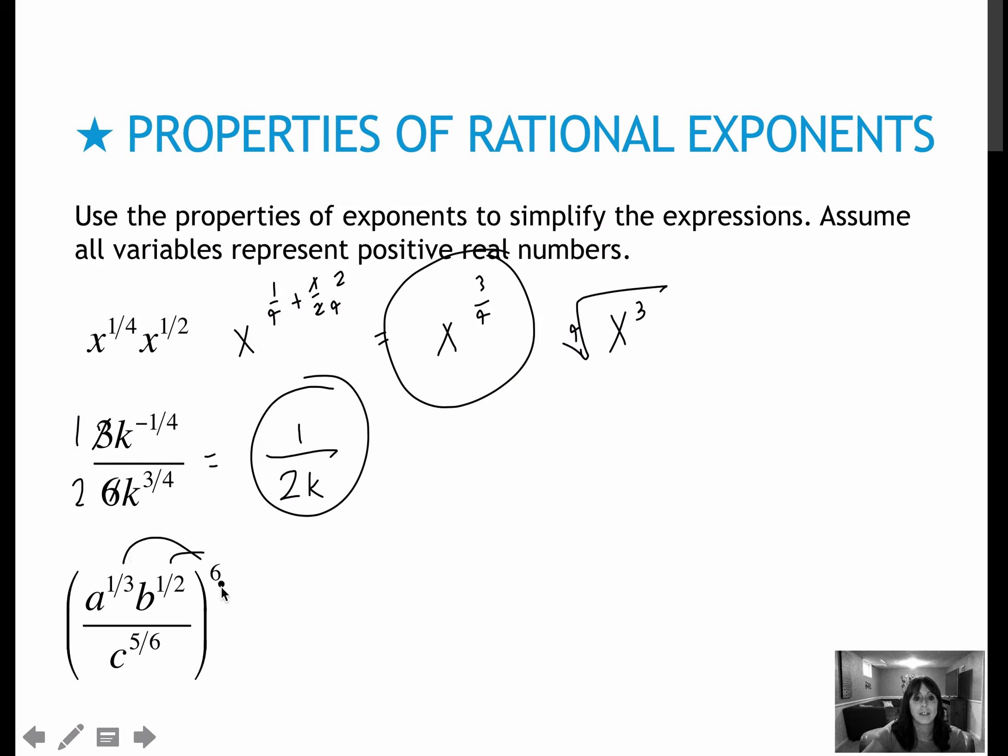And then for this one, everything is to the sixth power. So one-third times six, that's six times one divided by three, a-squared. b to the one-half, so that's six times one divided by two is three. c to the five-sixths, that's six times five divided by six, which is c to the fifth.